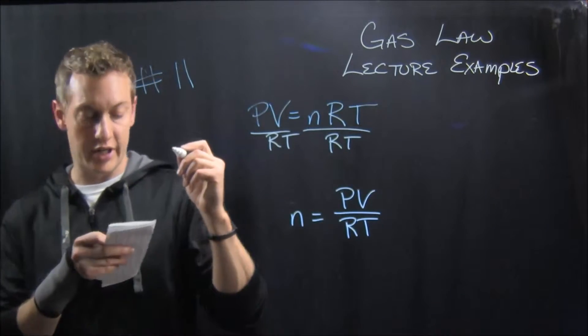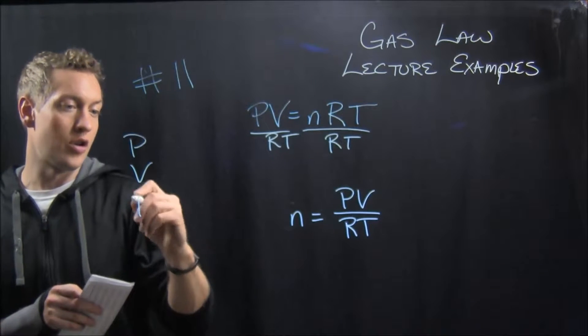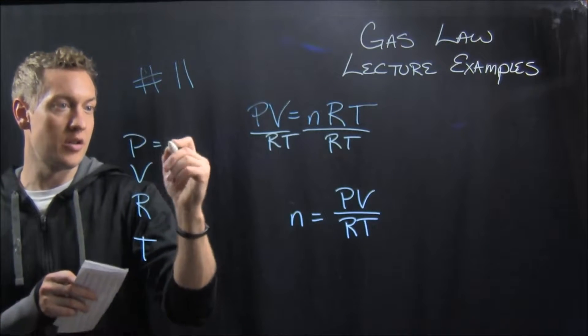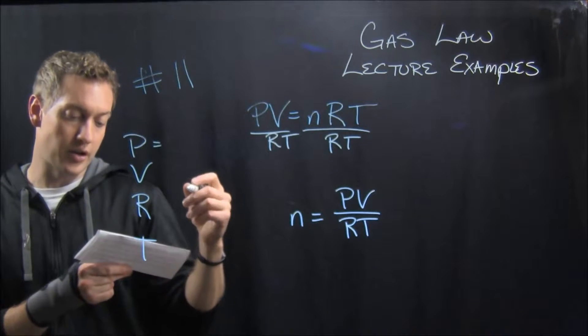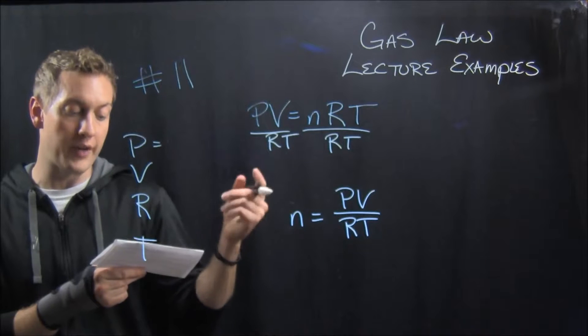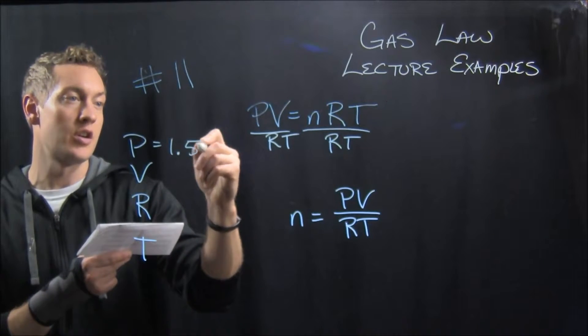Pressure, so what does it say our pressure is? So pressure, volume, R and T. Pressure, it says, is, so it gives us 1.50 atmospheres. Atmospheres is a measure of pressure, so that's our pressure.